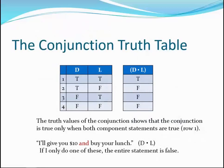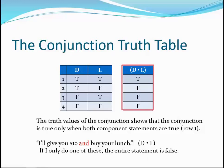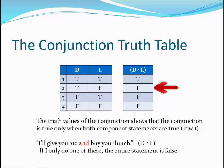Now let's look at the truth tables for the connectives, beginning with the conjunction. The base table for the two statements will serve as a reference. In this example, 'I'll give you $10' is represented by capital D, and 'I'll buy you lunch' is represented by capital L. The conjunction is represented by the dot. The table on the left shows all possible combinations of truth values; the table on the right shows the truth values when the two statements are joined by the conjunction. Row one shows D is true and L is true, so their conjunction is true. Row two shows the conjunction is false if D is true and L is false, and so on. The table spells out all possible truth values of the conjunction so we can easily see the resulting truth values.